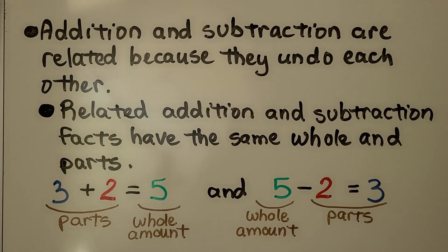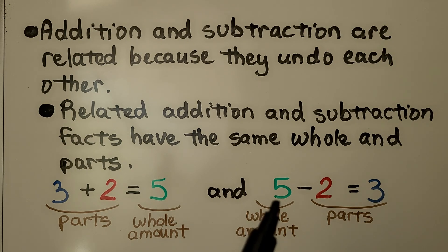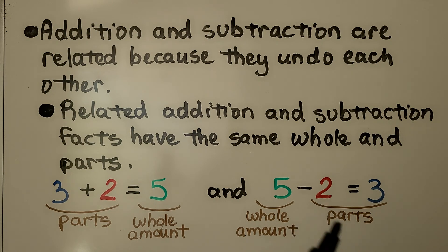Addition and subtraction are related because they undo each other. Related addition and subtraction facts have the same whole and parts. Here we have 3 plus 2 — those are the parts, the addends — and the whole would be the sum. For subtraction, the whole amount would be the first number, and the parts would be what we're taking away and the difference, the answer.